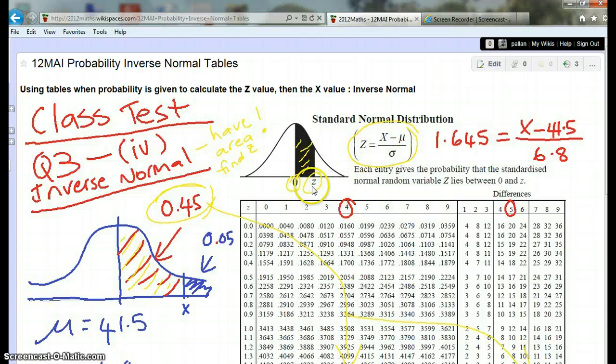You'd have an X here when the mean is not 0 and standard deviation is not 1. It's whatever the distribution has. That's the mean of the distribution, that's the standard deviation of the distribution, and that's the X value you're actually looking for.